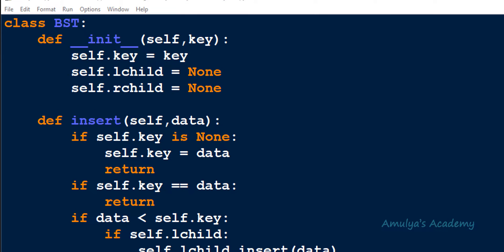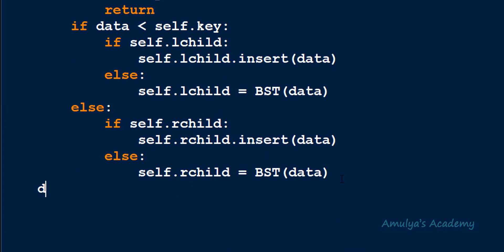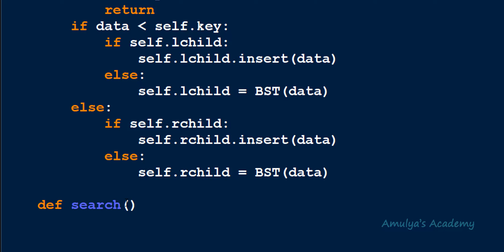So here, after the insert method, I will define a method named 'search' because we are writing this method for the search operation. The first parameter will be 'self', that is the object itself, followed by 'data' — the data of the given node I want to search. Inside this we need to define the search method body.